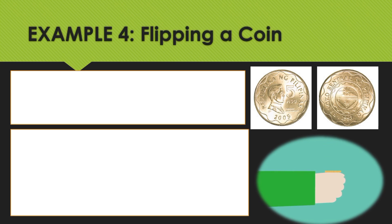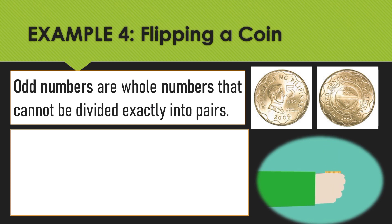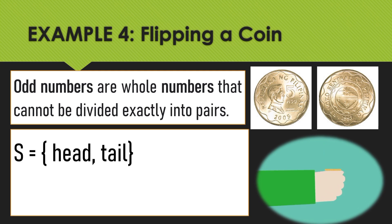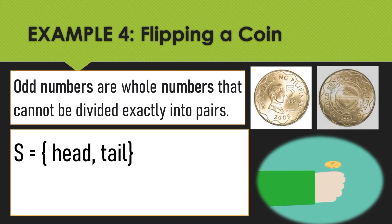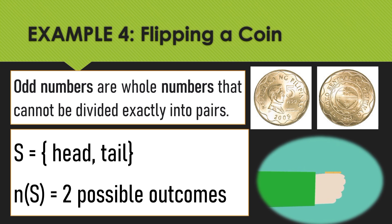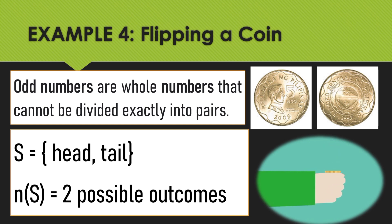Now we are going to get the sample space and the number of sample space in flipping a coin. Based on the figure, when you flip a coin, we have head and tail. So the sample space is equal to {head, tail}. As you observe with a 5-peso coin, we have a head side and a tail side. Therefore, our total possible outcomes is 2 — head and tail.